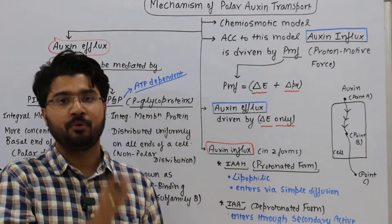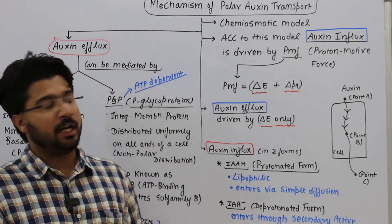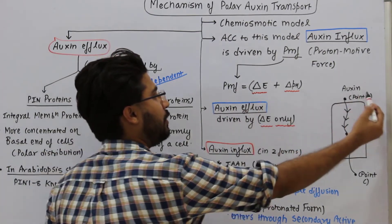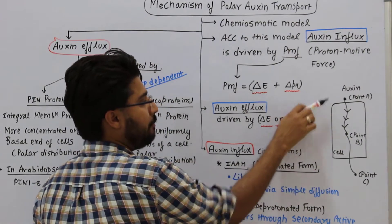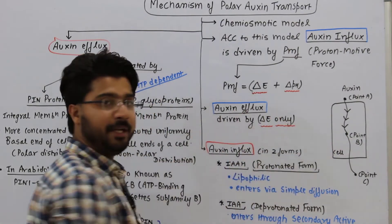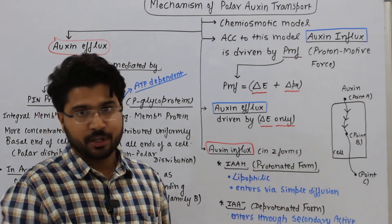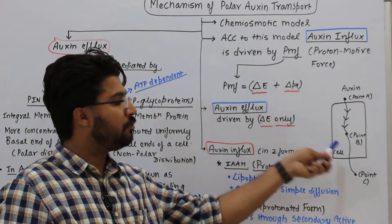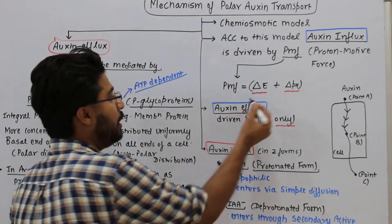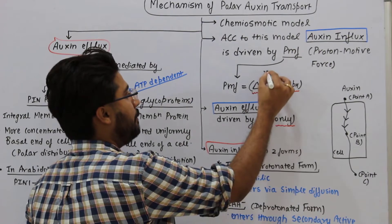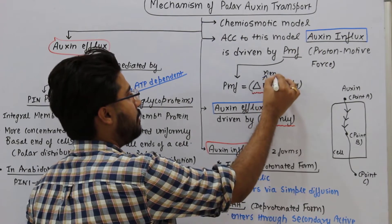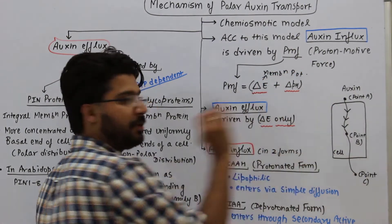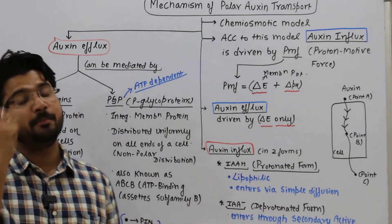These two factors, ΔE and ΔpH, are combined together and called PMF, which stands for proton motive force. The figure indicates that when auxin enters from point A to point B inside a cell — called auxin influx — the rate of entry depends on the difference in membrane potential and the difference in pH between the two points.